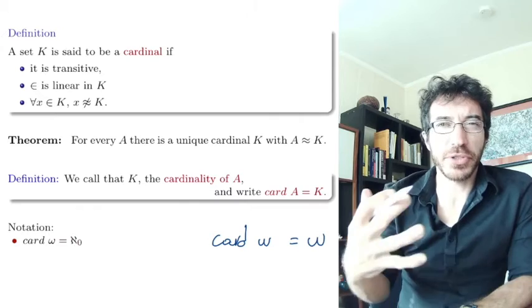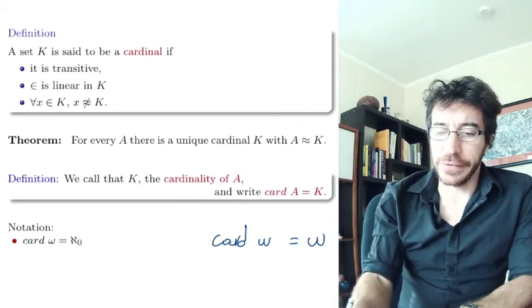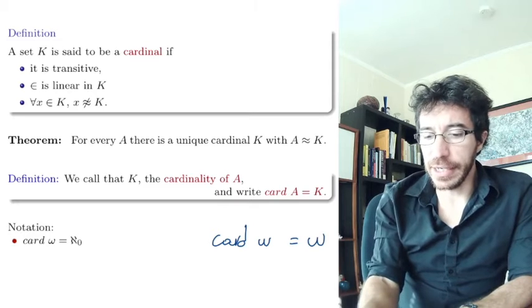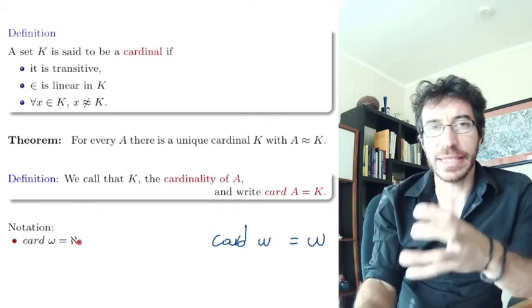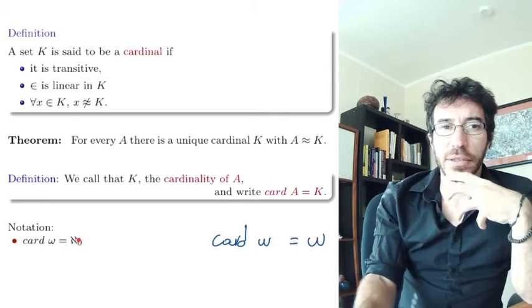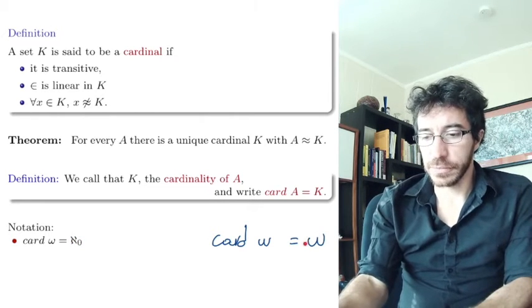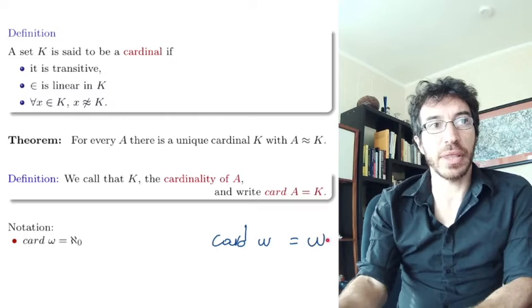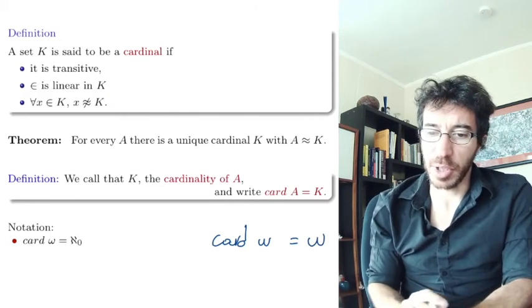So the not, the zero, is because it's the first infinite cardinal. So essentially, the difference between omega and Aleph Not—they are the same thing. Omega and Aleph Not are the same object. But Aleph Not, when we're talking about cardinals, we think of Aleph Not. When we're talking about natural numbers or ordinals, we're going to be thinking of omega. It's just depending on the usage which one we use, but they are the same object.